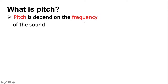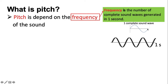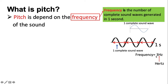So what is frequency? Frequency is the number of complete sound waves generated in one second. One complete sound wave means one full cycle of vibration. Let's say we have a graph of a sound wave recorded in one second — there are three complete sound waves in this graph. This means the frequency of this sound is 3 hertz.